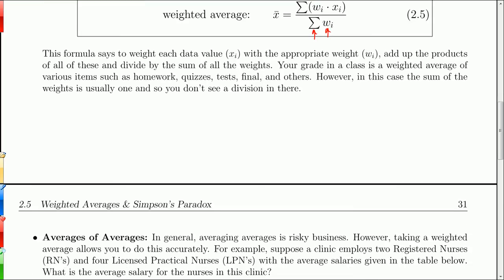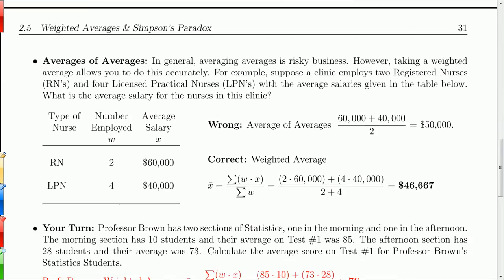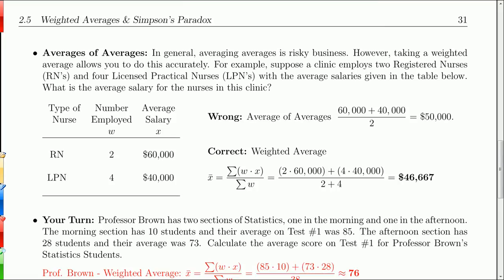All right, so here's an example of a weighted average that isn't a GPA. And it also demonstrates a right way and a wrong way to create averages. So what this example does is it says, all right, you're at a particular clinic, right? And you have six nurses. You have two RNs and four LPNs, licensed practical nurses and registered nurses. So the registered nurses make $60,000 on average. They don't necessarily each make $60,000, but they make them on average. And the LPNs make an average of $40,000.